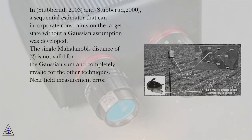In Stubberud, 2003 and Stubberud, 2000, a sequential estimator that can incorporate constraints on the target state without a Gaussian assumption was developed. The single Mahalanobis distance of d² is not valid for the Gaussian sum and completely invalid for the other techniques.